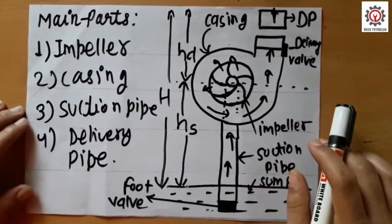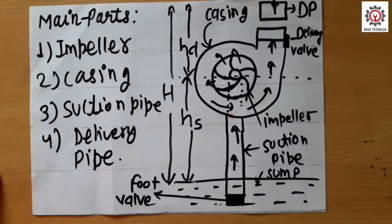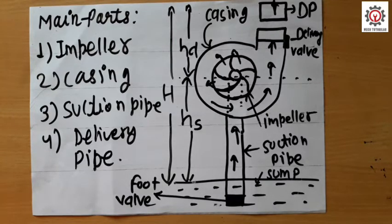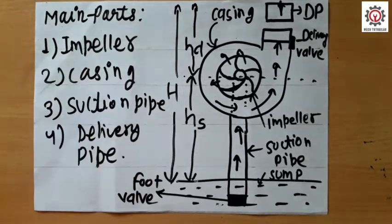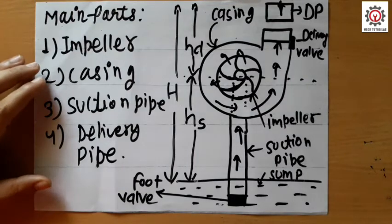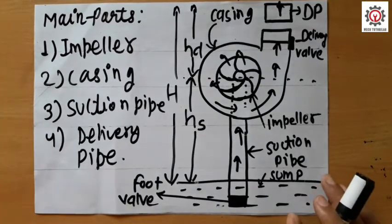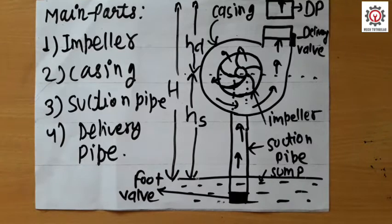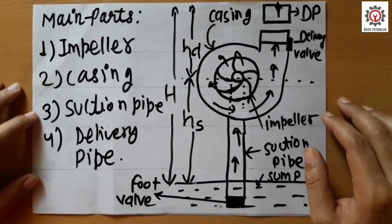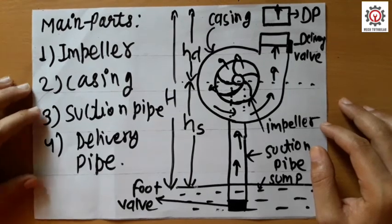In the upcoming video we will discuss the velocity triangle of the centrifugal pump. Also, the casing has three types: volute casing, vortex casing, and casing with guided blades. I will discuss these three types of casing in the upcoming video. Hope you liked this lecture. Please subscribe to my channel and share these videos with your classmates and friends. Thank you so much.